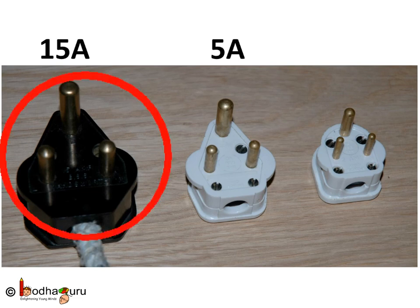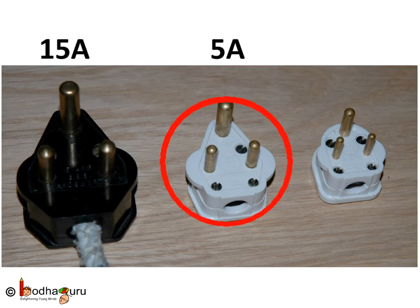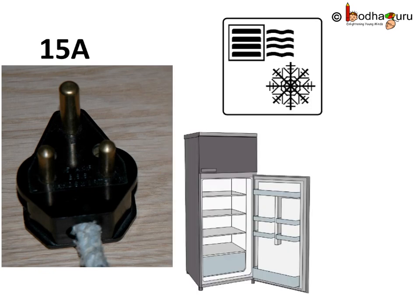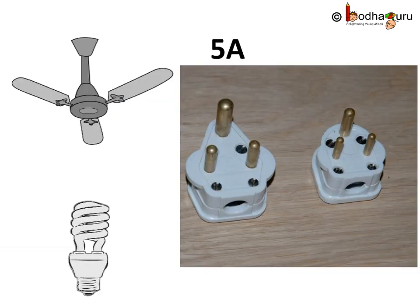There is a 15 Ampere current circuit and also a 5 Ampere current circuit. The 15 Ampere circuit powers appliances which need more power, like AC, refrigerator, air cooler, geysers, etc. And the 5 Ampere current circuit provides less power for fans, bulbs, etc.